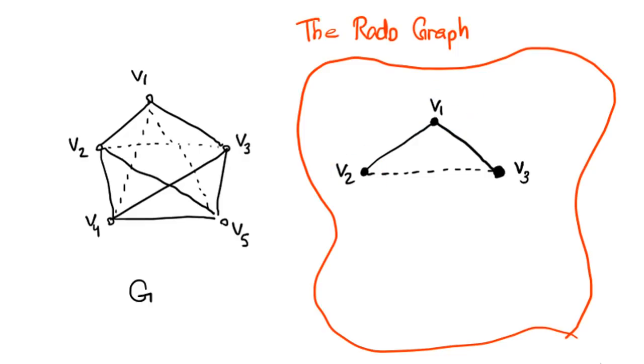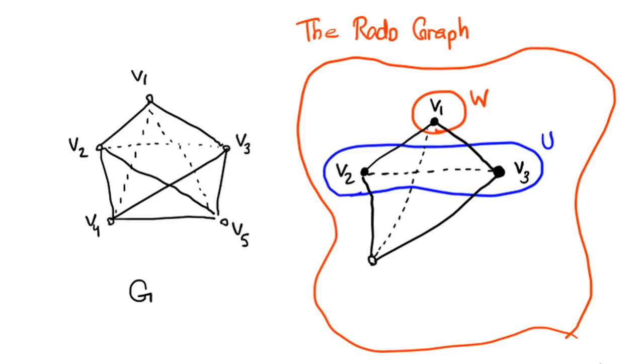At this point, you might see what we're doing. Give a guess, how would you find v4 inside of the Rado graph? Well, here comes the answer. Put U be the set containing v2 and v3, and W be the set containing v1. Then, by the killer property, we can find the copy of v4 inside of the Rado graph.